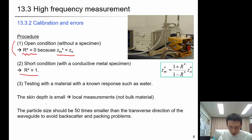Skin depth is small and it only measures local measurements. Actually when you have this kind of probe and when it emits the wave, the skin depth in soil is about several millimeters. So it's only capturing a certain very limited space. The particle size should be 50 times smaller than the transverse direction of the waveguide to avoid backscatter and packing problems.